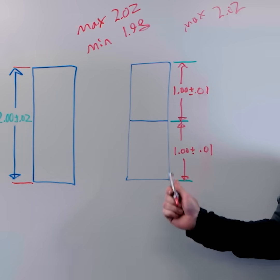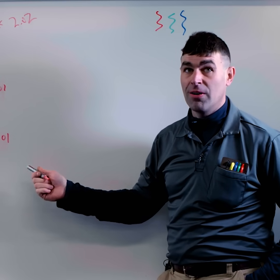So by going from one part to two parts, we've cut the tolerance on each part in half.